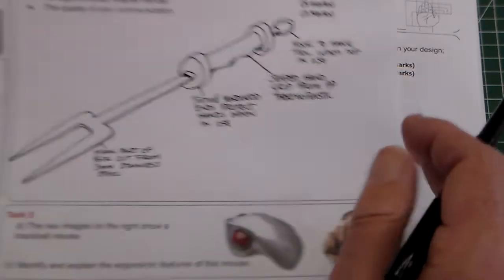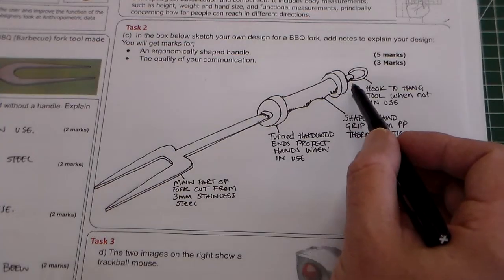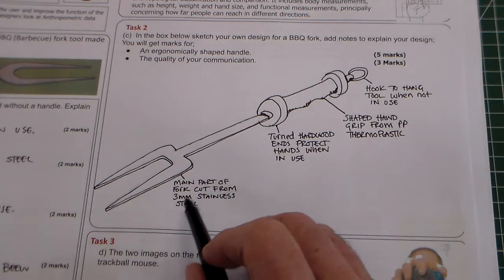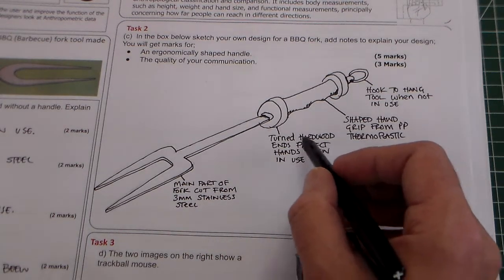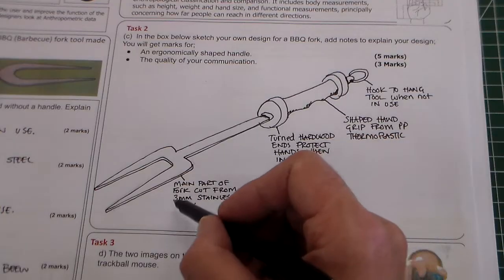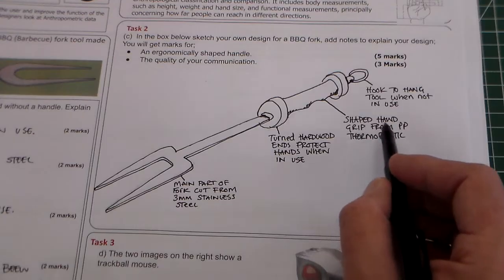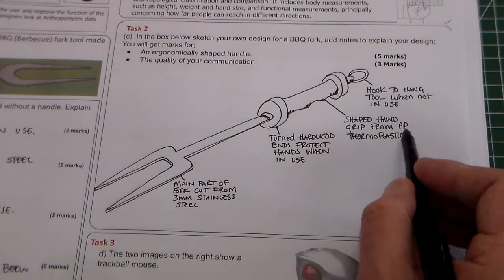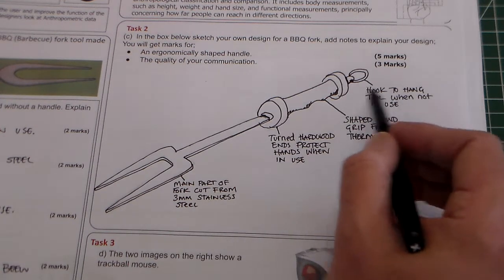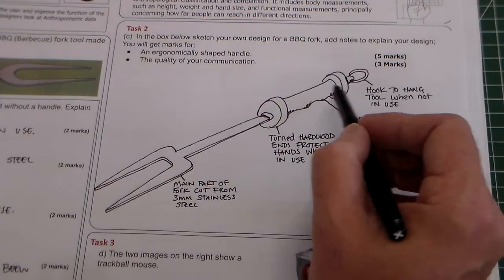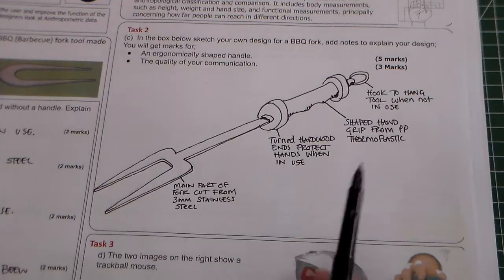So for this, here's one that I've already done. You can see I've drawn my barbecue fork and the notes I've added are: main part of fork cut from three millimeter stainless steel, turned hardwood ends. It's important that you add the names of materials - don't use generic terms like wood, metal, and plastic. I said shaped hand grip from PP polypropylene thermoplastic, hook to hang up when not in use. So I've explained my design, I've drawn an ergonomically shaped handle, there's good quality communication, so that will get me the eight marks.